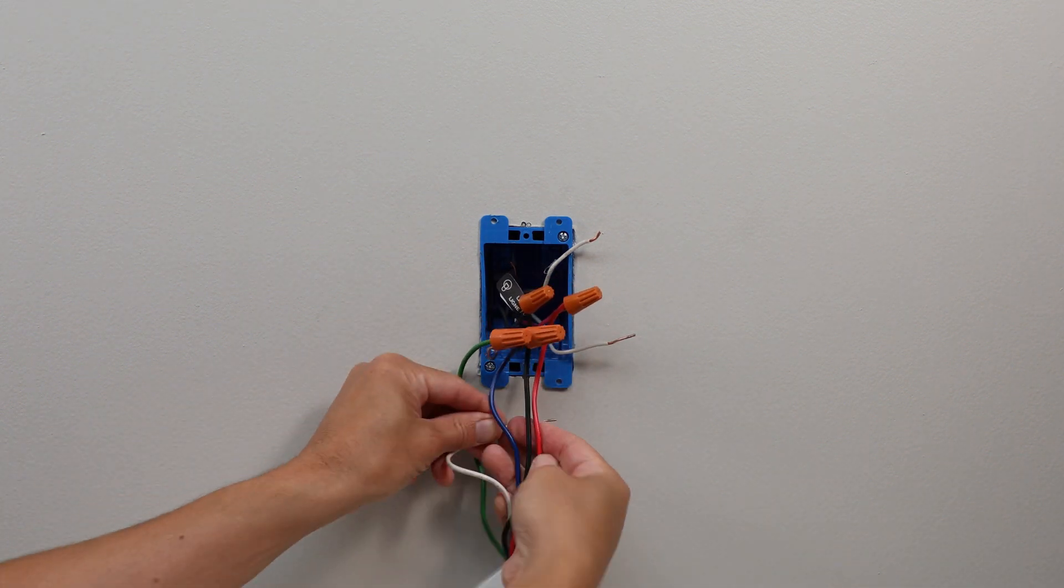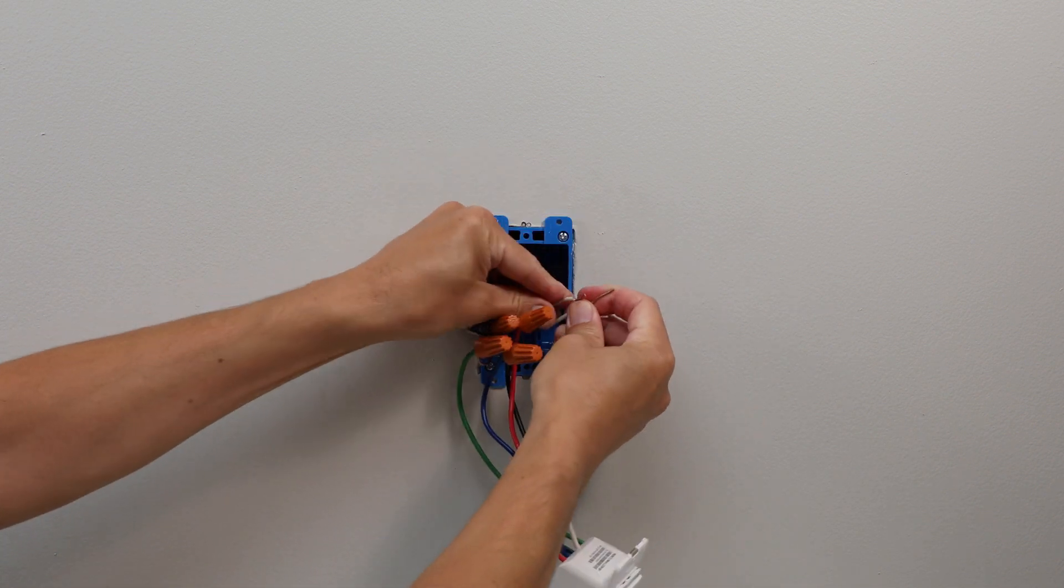Finally, use a wire nut to connect the white neutral wire from the switch to the one in the wall.